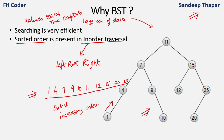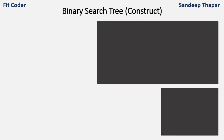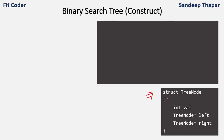Due to these two advantages, BST is an important topic for interviews. Now let's see how we can create a BST from a given set of data. The structure of the tree node remains the same as in binary tree — we have an integer val and two left and right pointers. You should be familiar with binary tree concepts before studying BST.